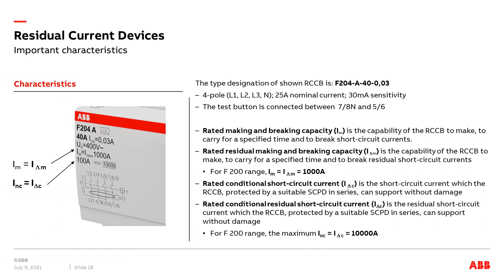The tripping time is not adjustable; it is set according to a predetermined time following the standard. The RCD has a nominal current — in this example 40A — and must not be used with a higher operating current. Therefore, the overload protection must be smaller than or equal to the nominal current of the RCD; so in this example the MCB should be 40A or smaller. The rated making and breaking capacity IM is 1000A. The rated conditional short circuit current is 10kA, protected by a suitable short circuit protection device.